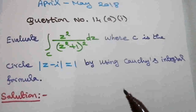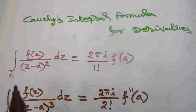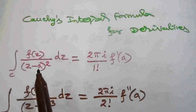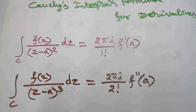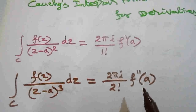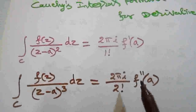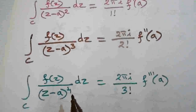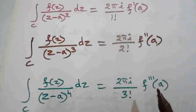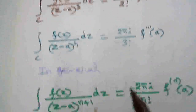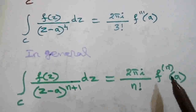Before solving, let's discuss Cauchy's integral formula for derivatives. The formula states: integral over c of f(z) divided by (z minus a) squared dz equals 2πi by 1 factorial times f'(a). Similarly, (z minus a) cubed gives 2πi by 2 factorial times f''(a), and (z minus a) to the power 4 gives 2πi by 3 factorial times f'''(a). In general, if the denominator has power n+1, it is n factorial times the nth derivative.